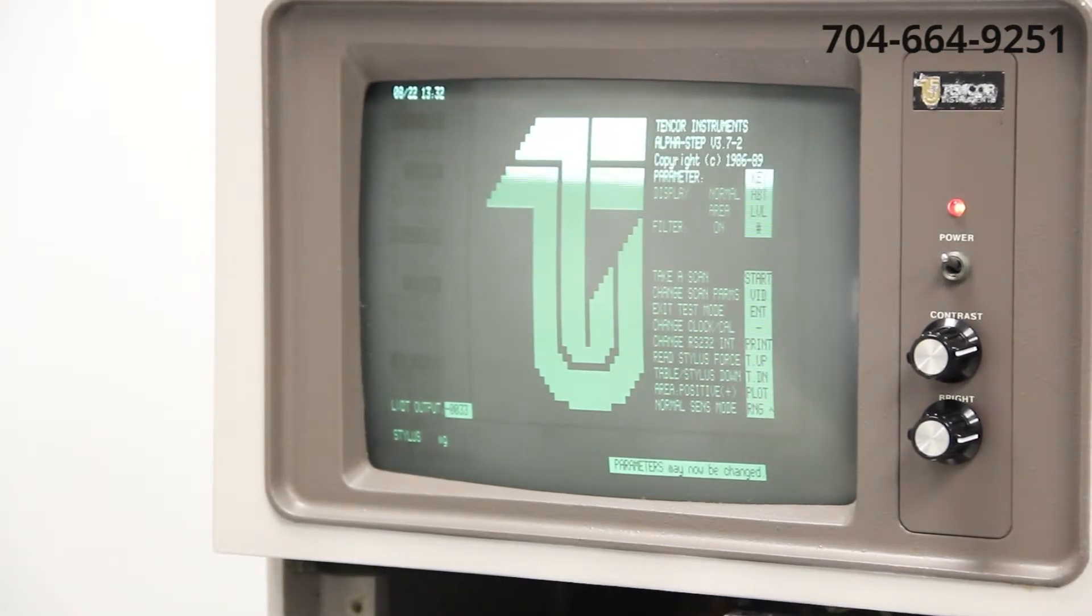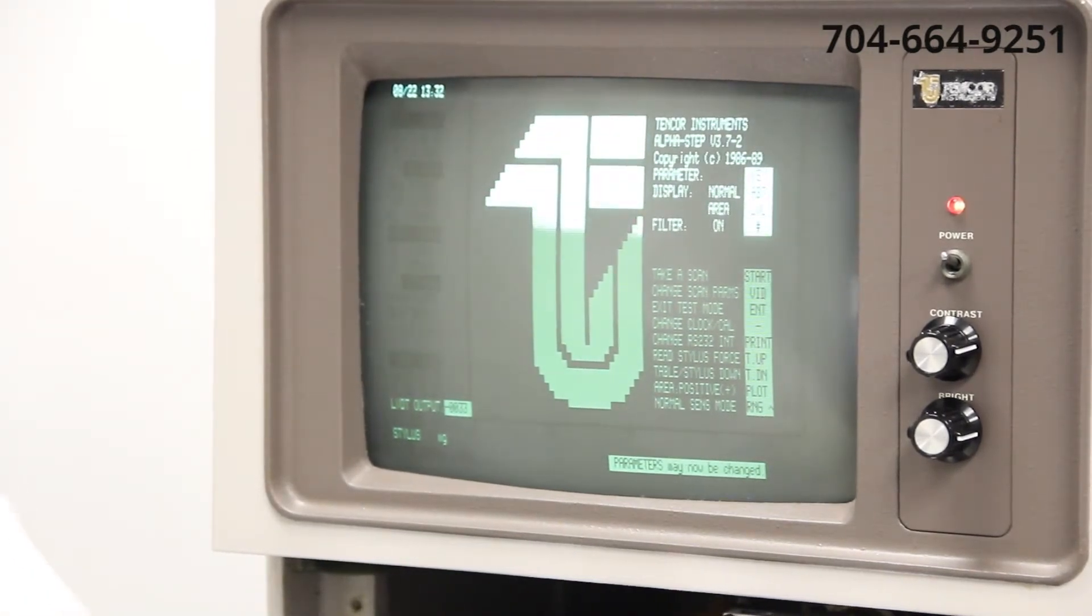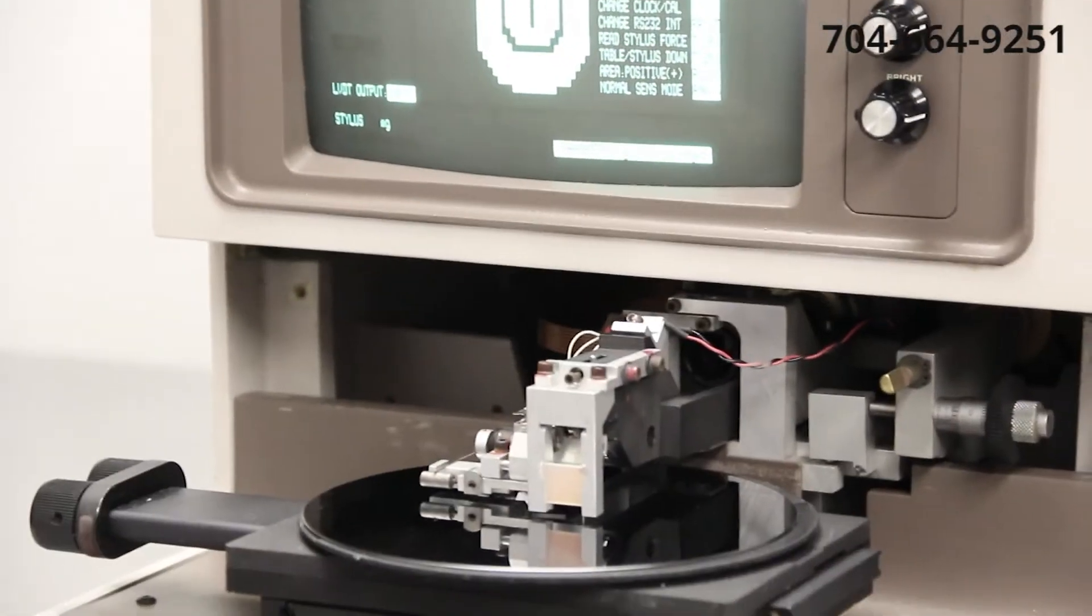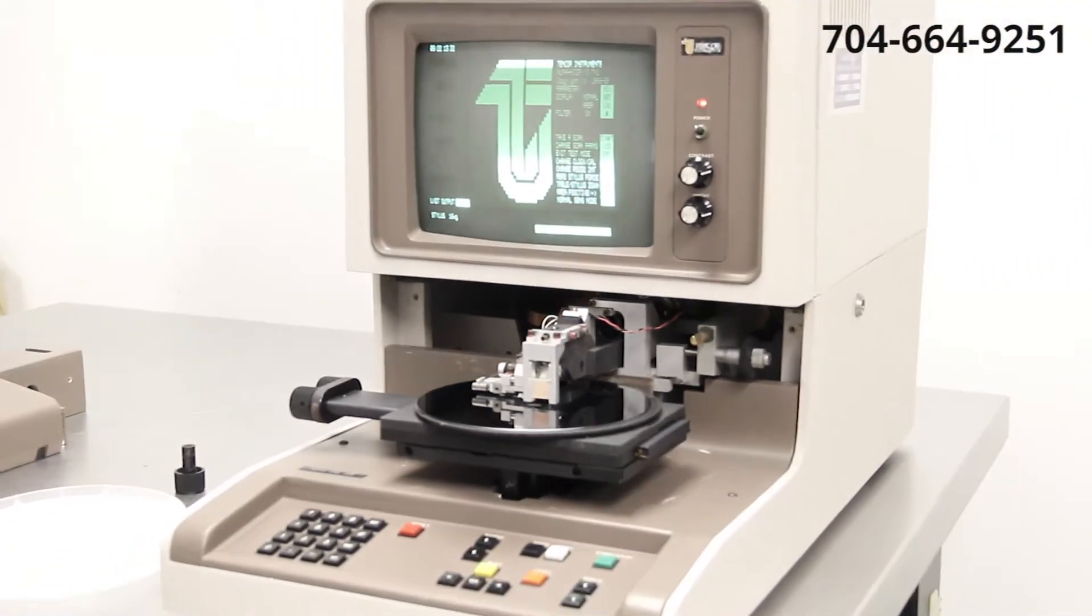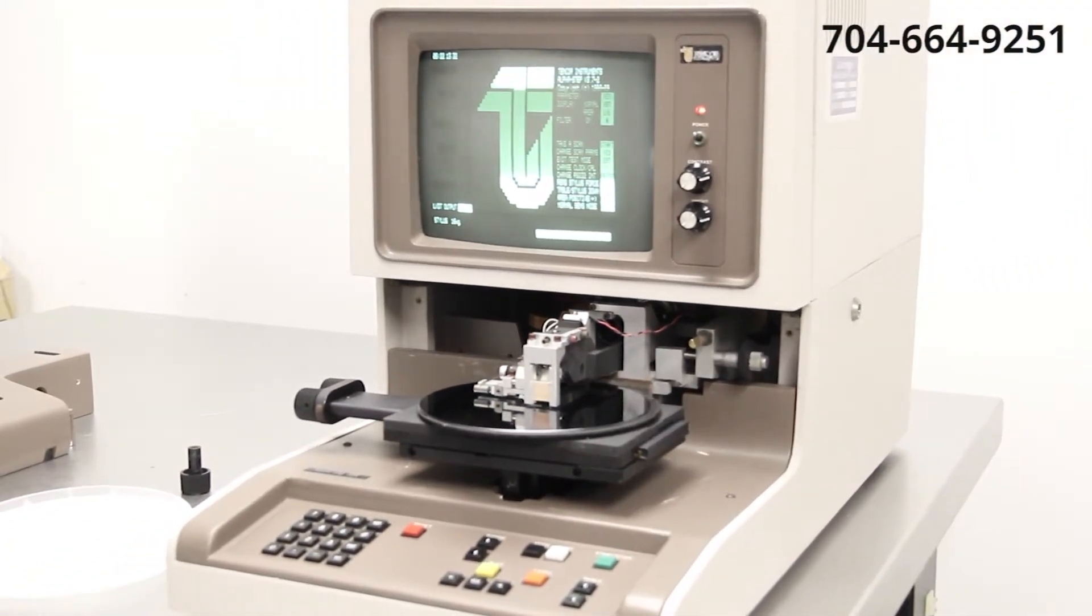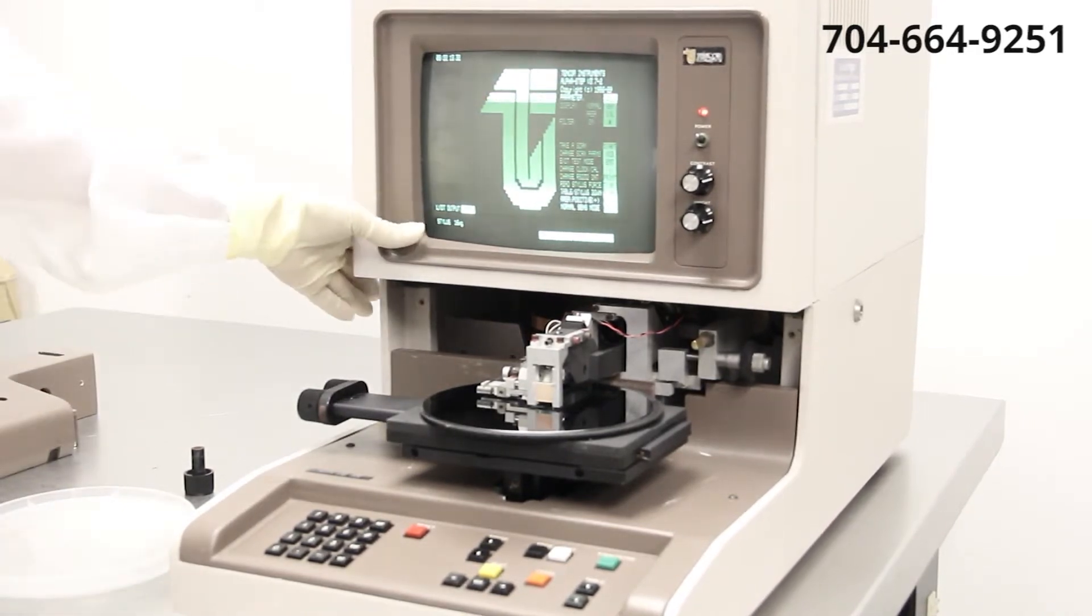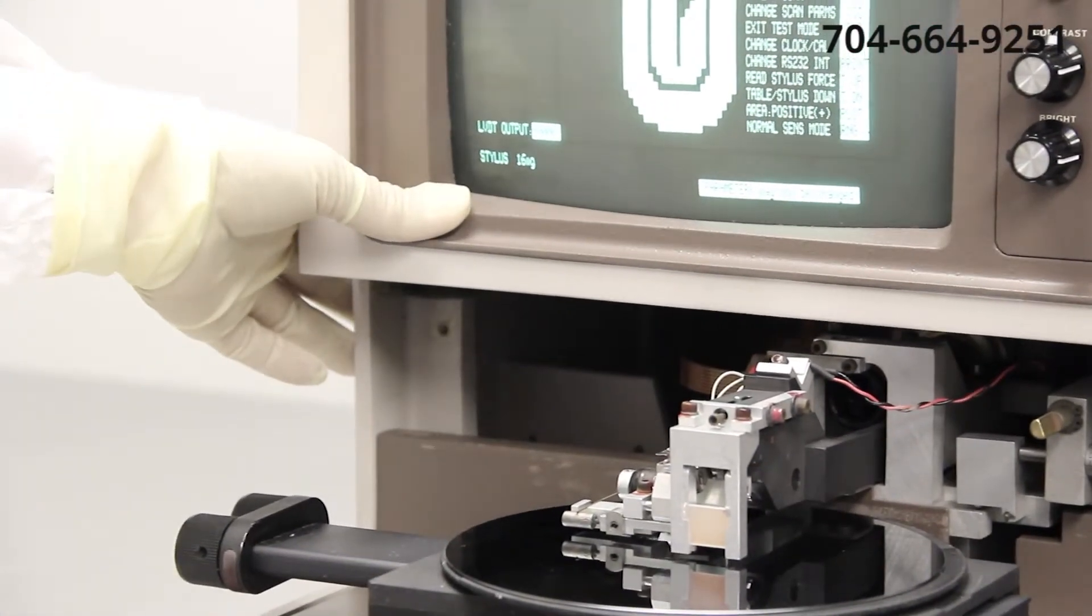To initialize the stylus force calibration, we're going to press the table up button one time. The tip will come into contact with the substrate and then retract. As you can see here, the stylus force is really at 16 milligrams.